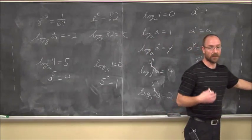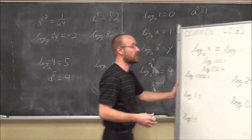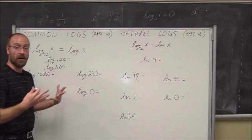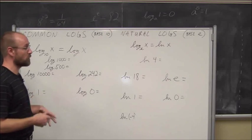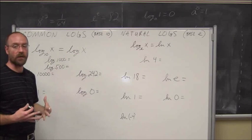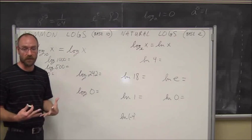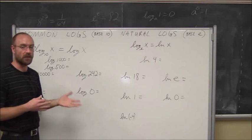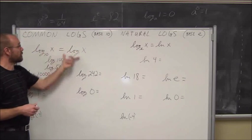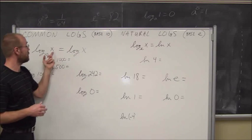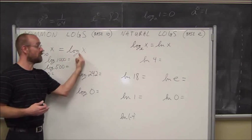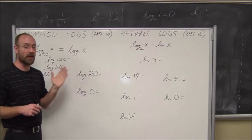Let's take a look at some logs we're going to come across on a regular basis, whether in other classes like chemistry, physics, biology, or economics. The first is the common log — base 10. It's called the common log because our number system is a base 10 number system. If I have log base 10 of x, being a common log, I can just write it as log of x. When we do not see the base written, we assume a common log — a base 10 logarithm.